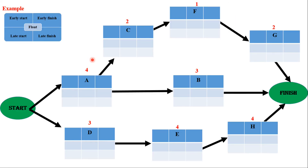Now let's use a practical network diagram example we've seen in previous videos. Notice the box layout: early start and early finish are on the top left and right corners, late start and late finish are on the bottom corners, and float is placed in the middle. The duration for each activity is shown on top of the box — four for activity A, two for activity C, and so on.